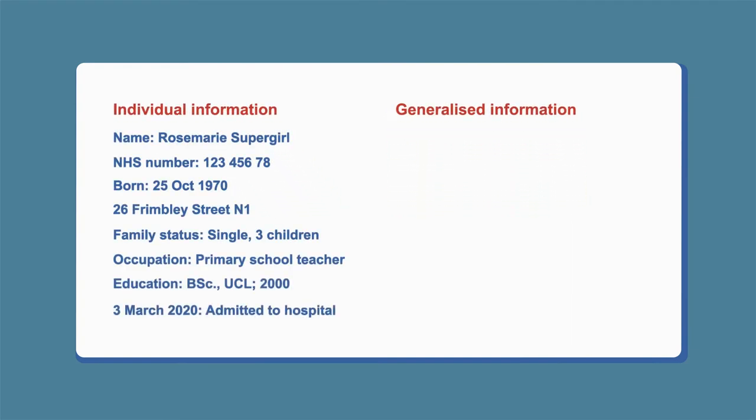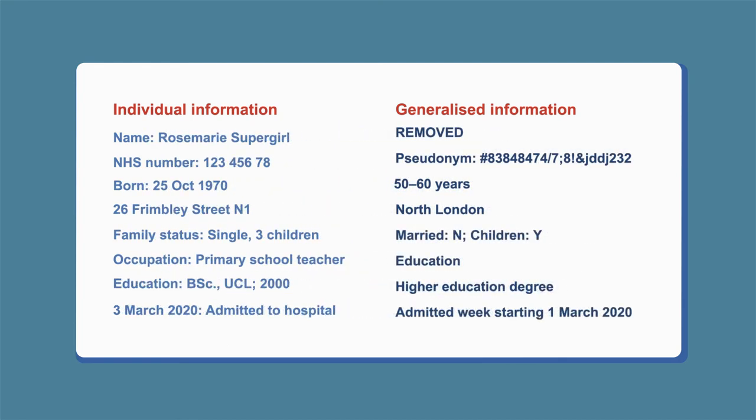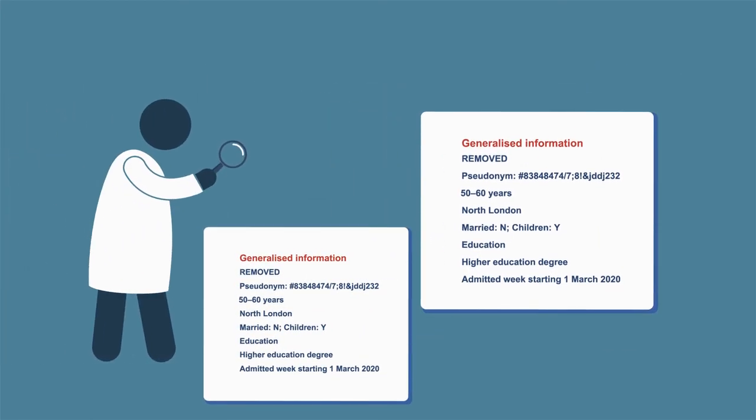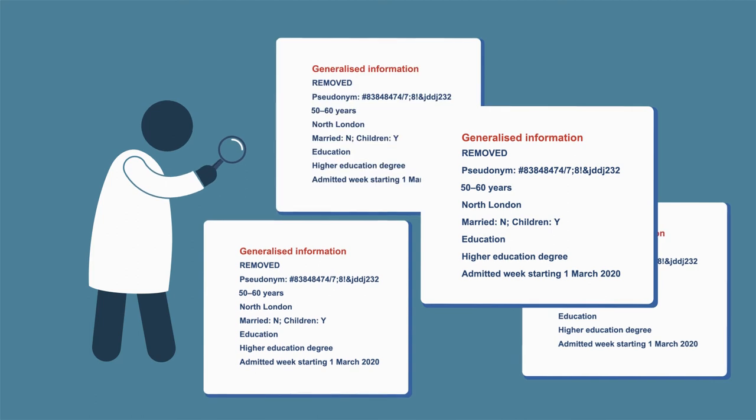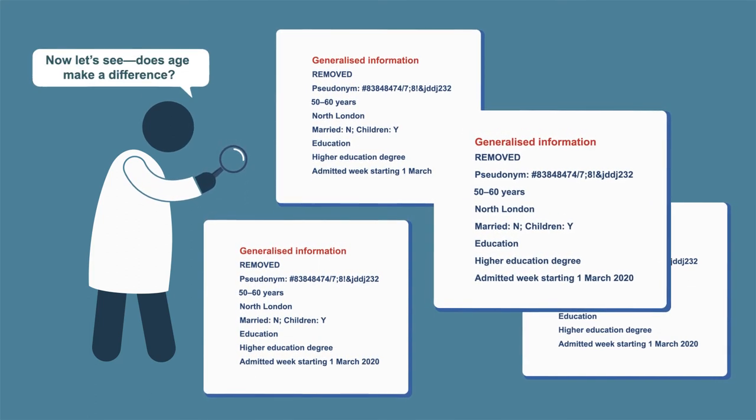Take Rosemary Supergirl. You can use generalized descriptions of things like her occupation and education. You couldn't identify her, but you could compare the generalized information with the same kind of information from other people, and see if things like age and occupation may be factors in certain diseases.